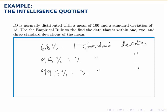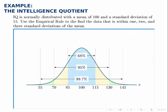95% of people will have an IQ score between 70 and 130, and almost everyone will have an IQ score between 55 and 145.